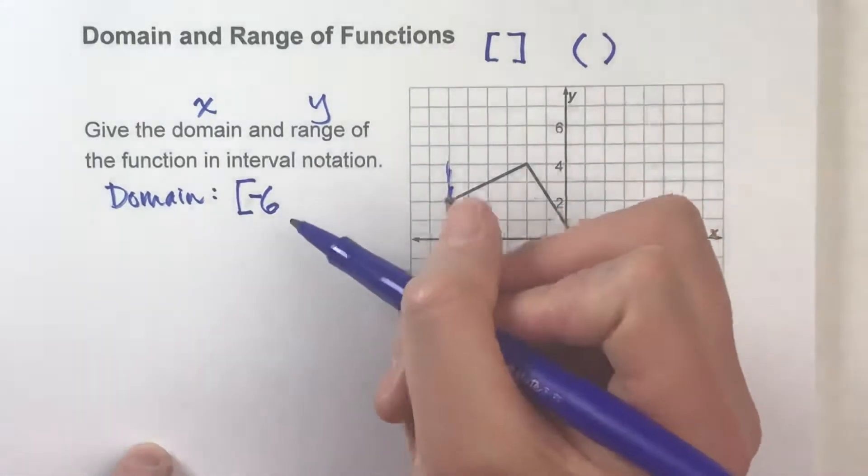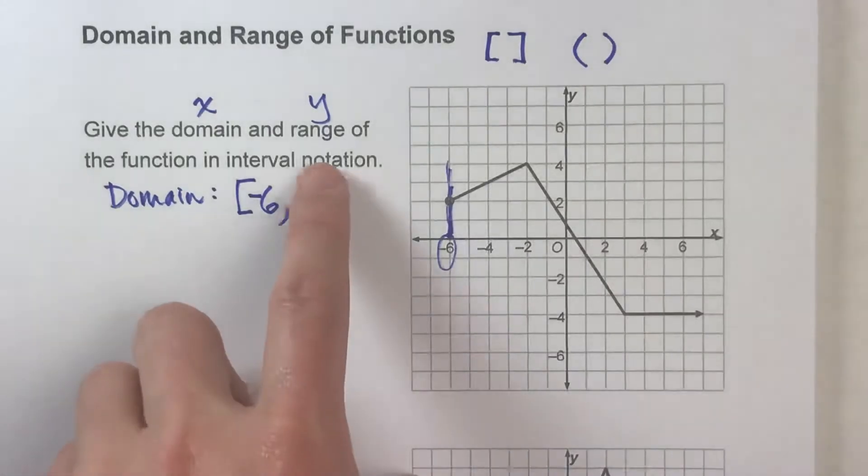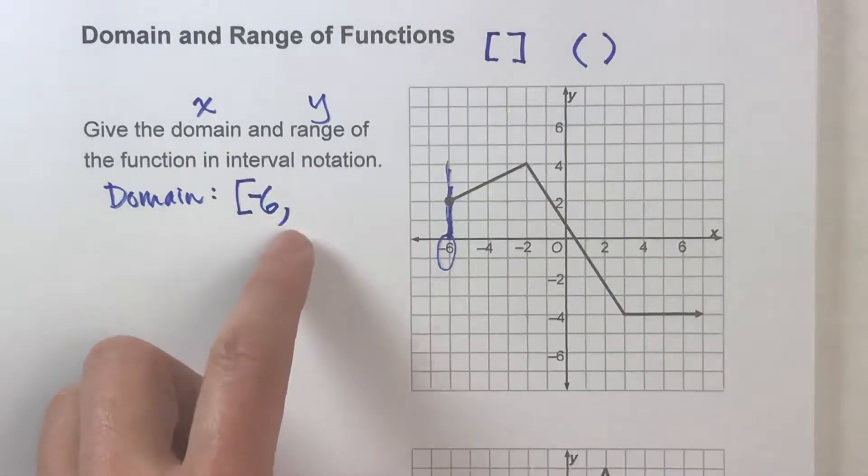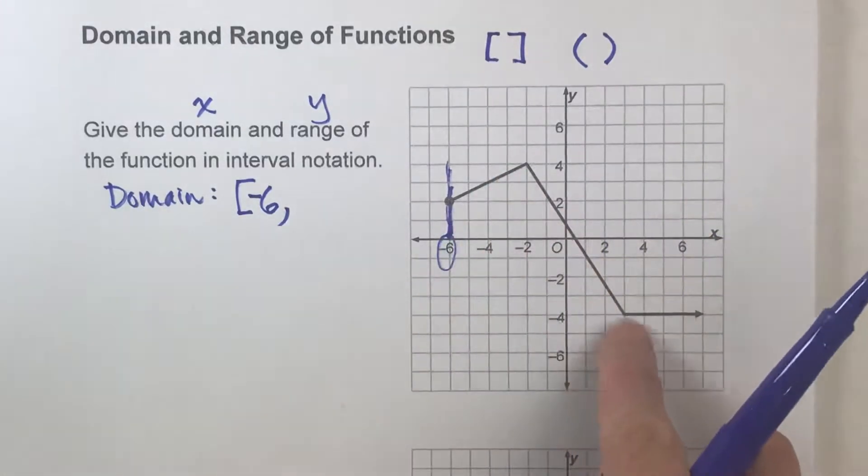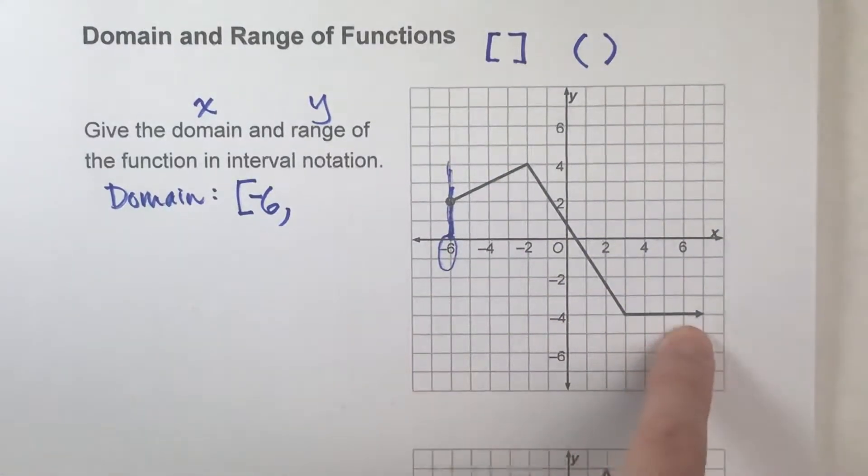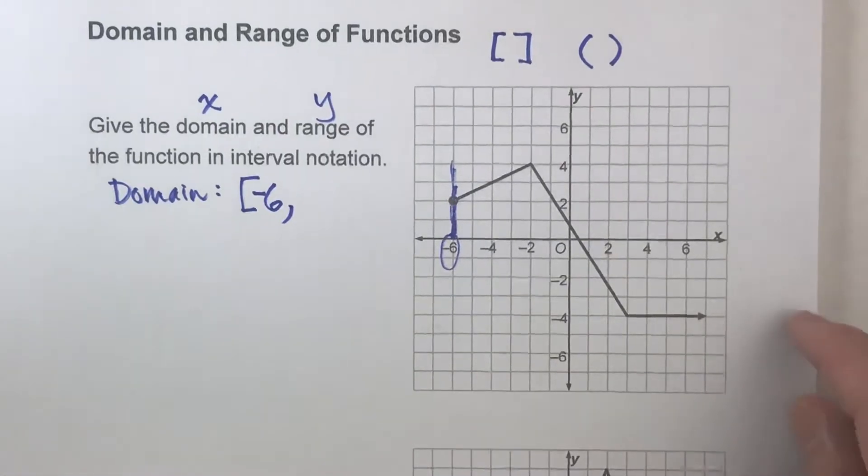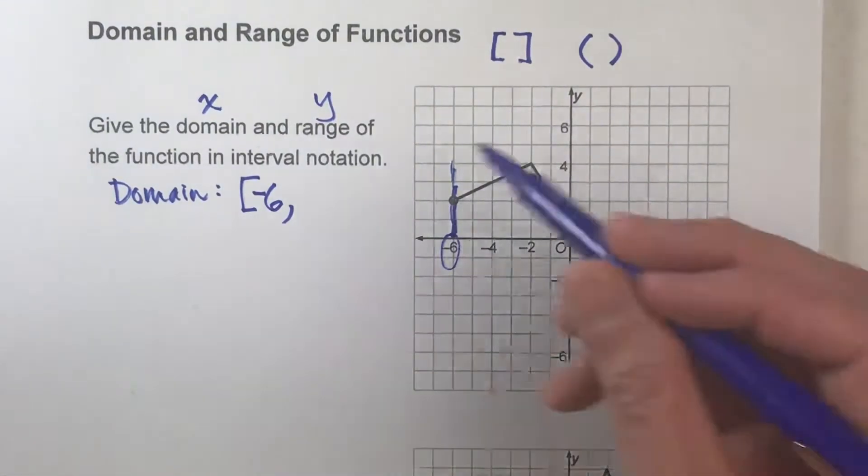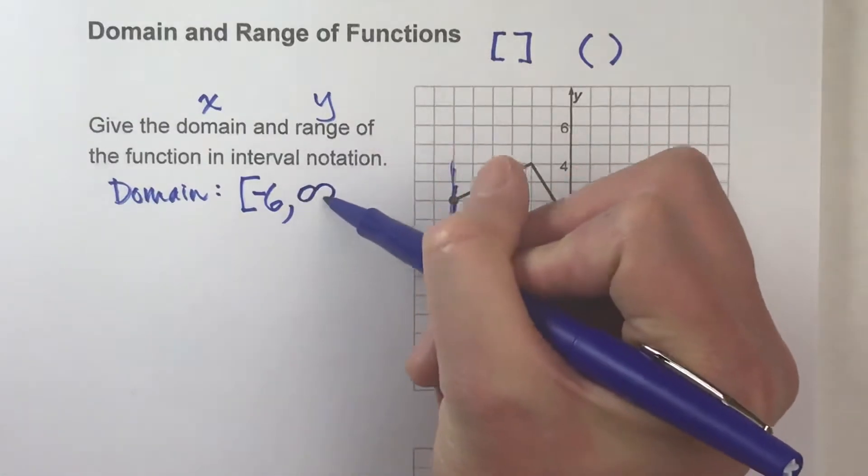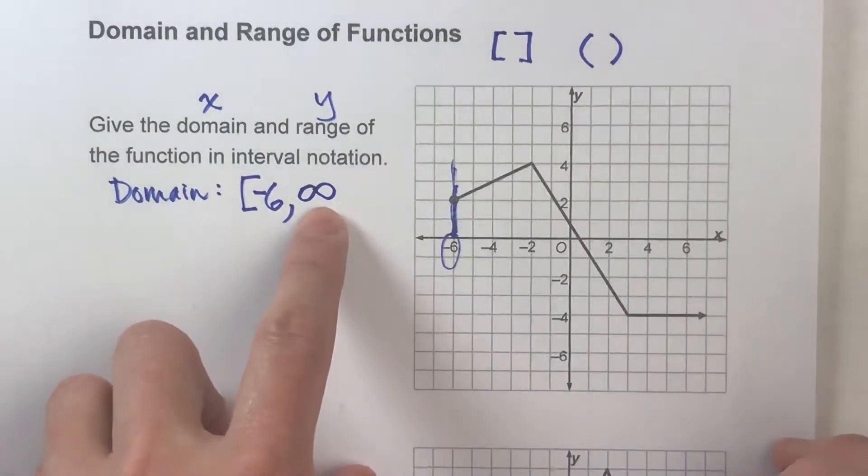Now, I'm going to put a comma because interval notation has the smallest and then the biggest separated by a comma. What is the biggest possible x value this can be? Well, if you go side to side, notice there's an arrow at the end of this one saying it continues forever. So it's going to keep going. So what is the biggest value? Well, there isn't one.